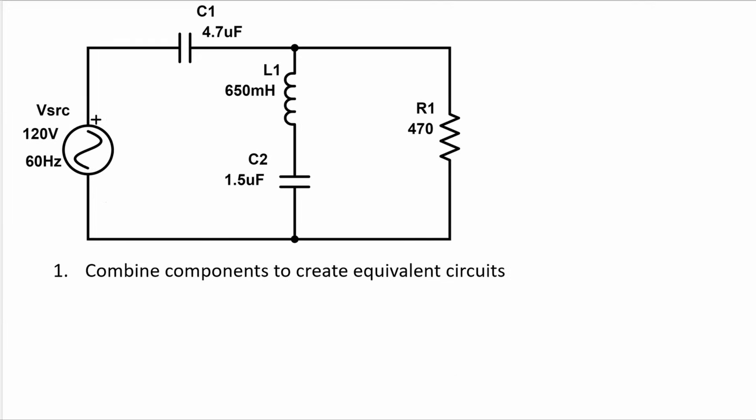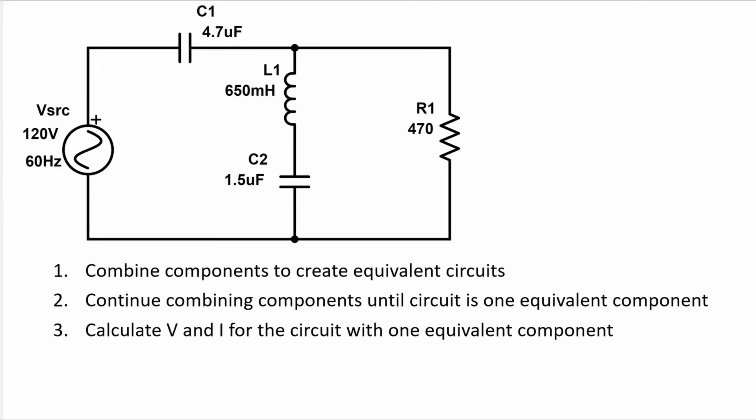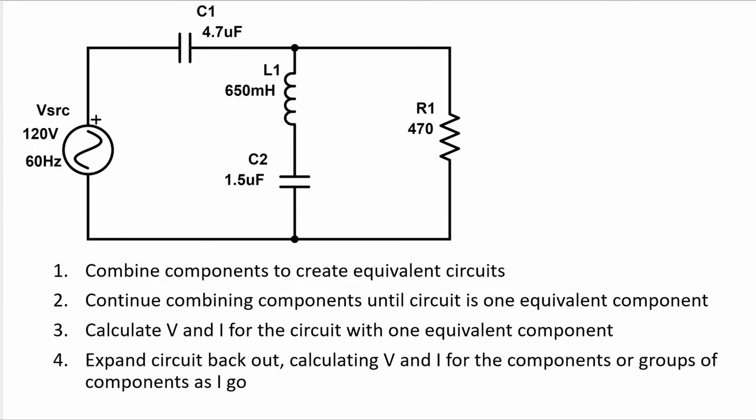The general strategy I'm going to take is to start by combining components to create an equivalent circuit and continue combining components until the circuit is one equivalent component, then calculate voltage and current for that single equivalent component, and then finally expand the circuit back out, calculating voltage and current for the components or groups of components as I go until I've done this for every component in the circuit.